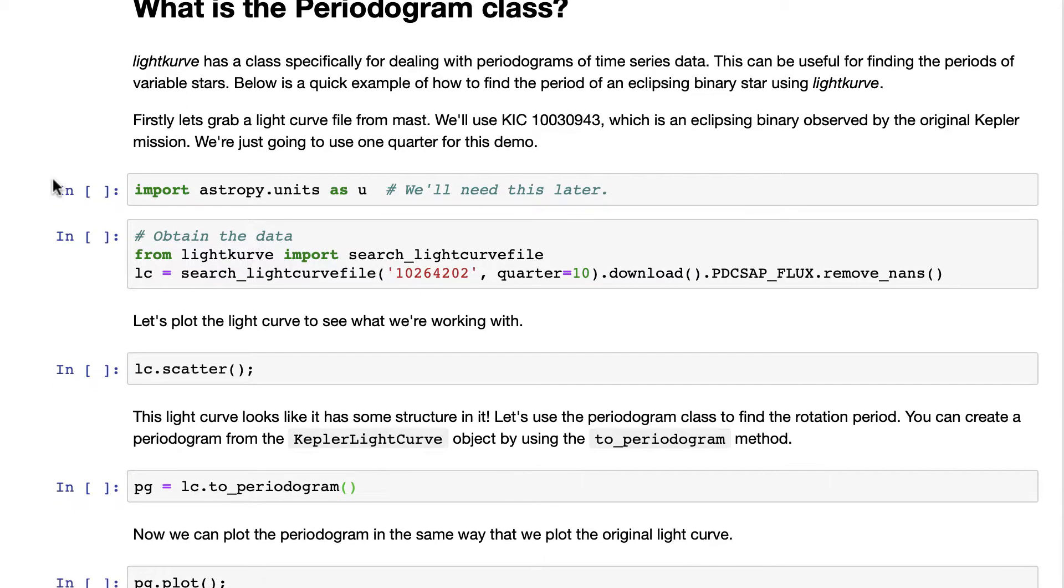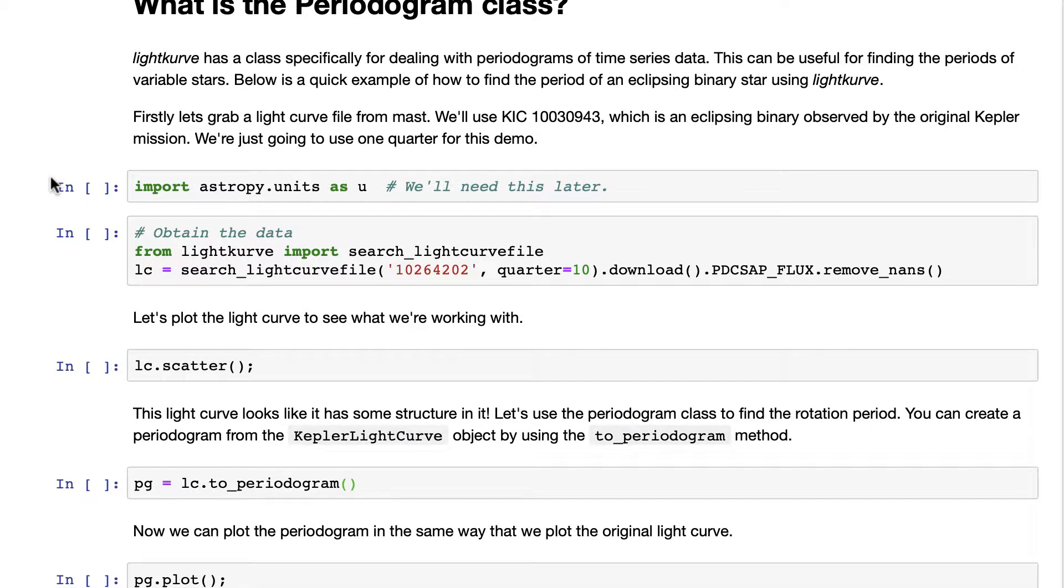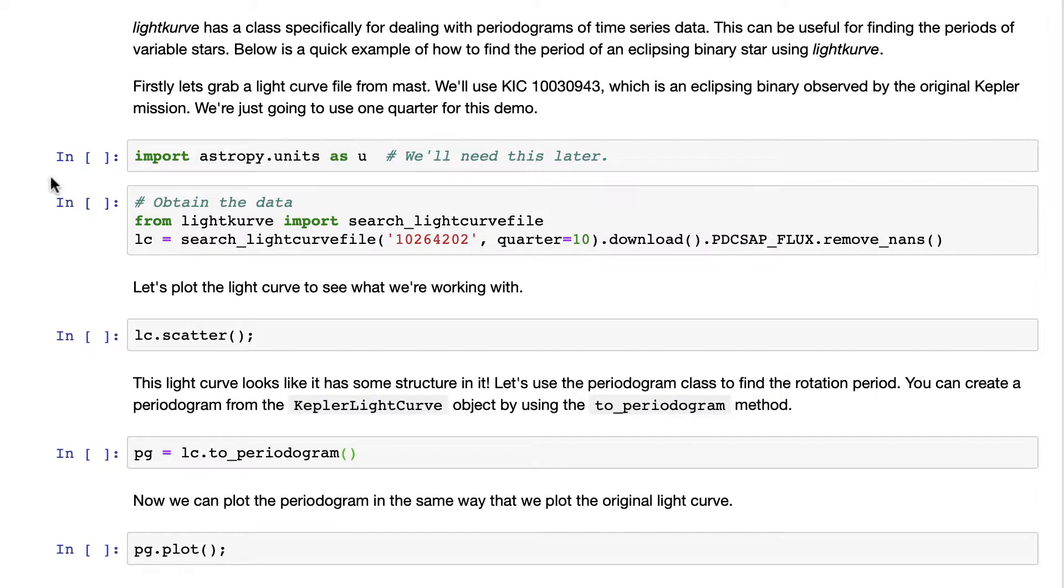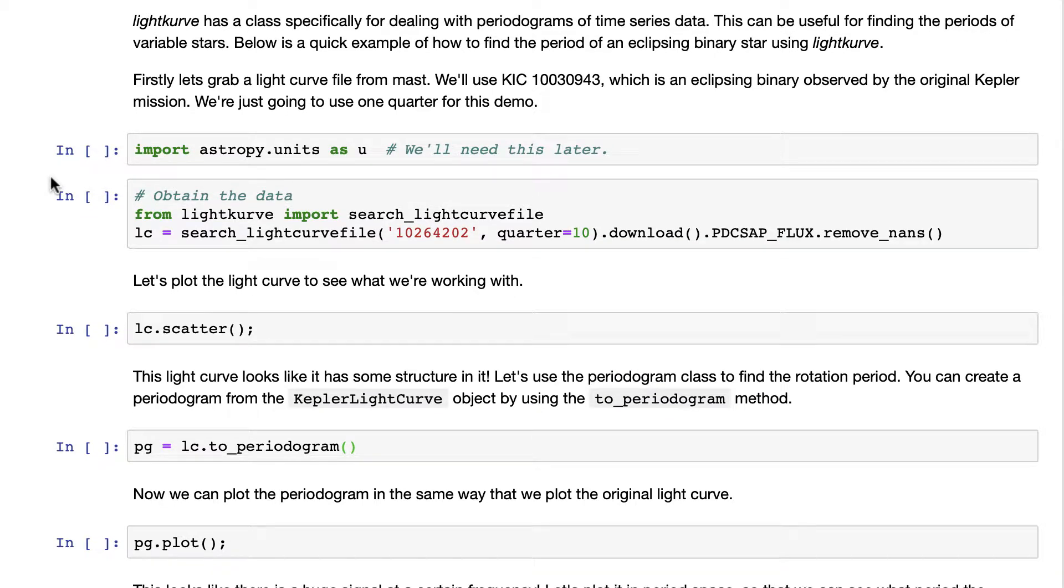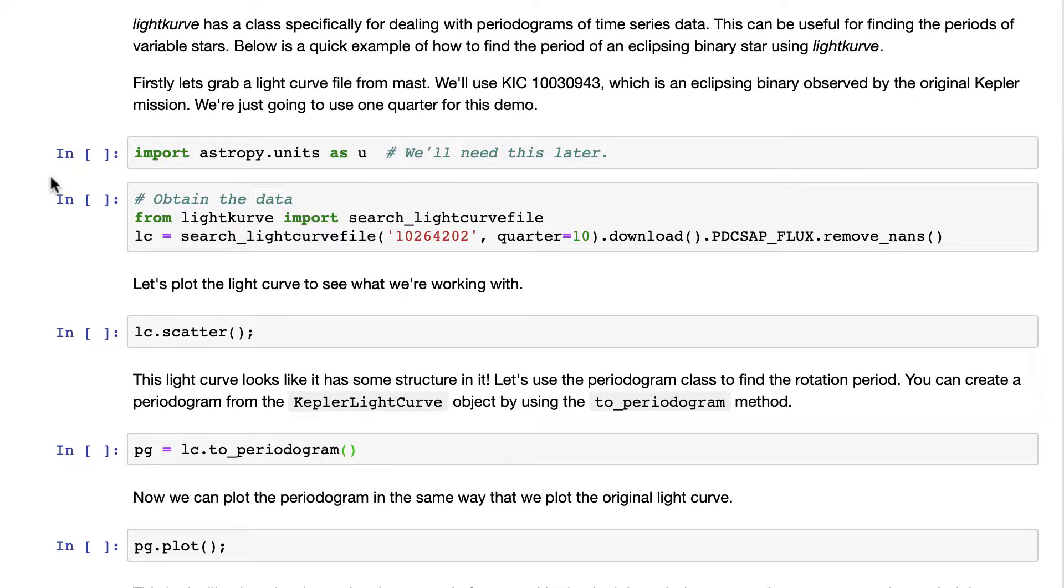In this tutorial we're going to see an example of a binary star, specifically an eclipsing binary star, which is when one star goes in front of the other and you can see the stars eclipsing the brightness of each other.